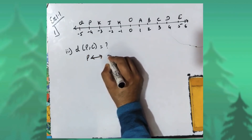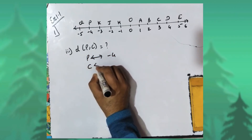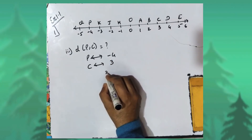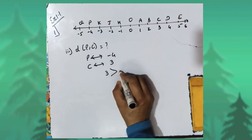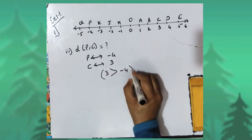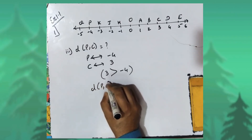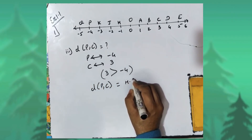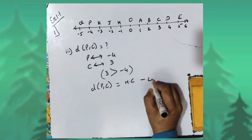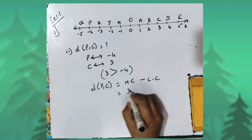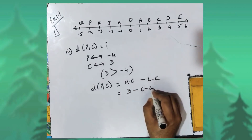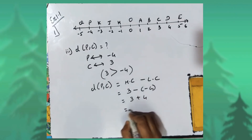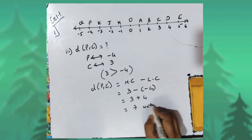Third sum: distance PC. The coordinate of P is minus four and the coordinate of C is three. Three is greater than minus four, therefore distance PC is found using the formula: higher coordinate minus lower coordinate. Three minus minus four becomes three plus four, which equals seven units.